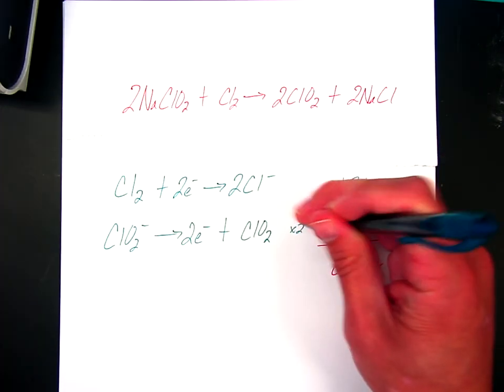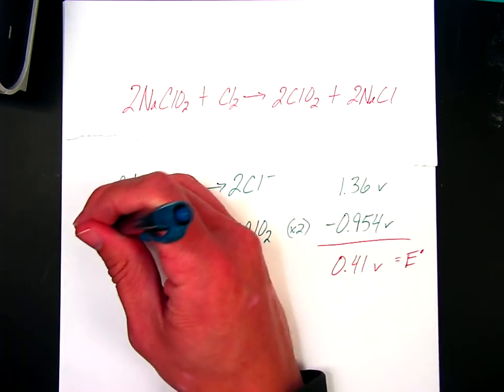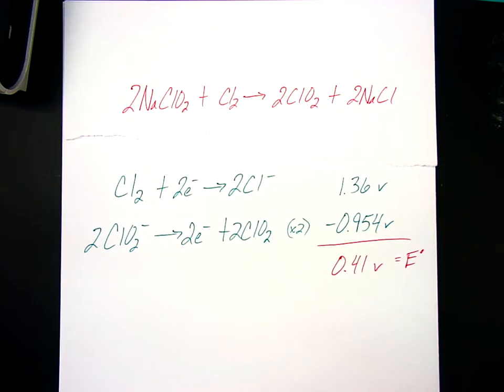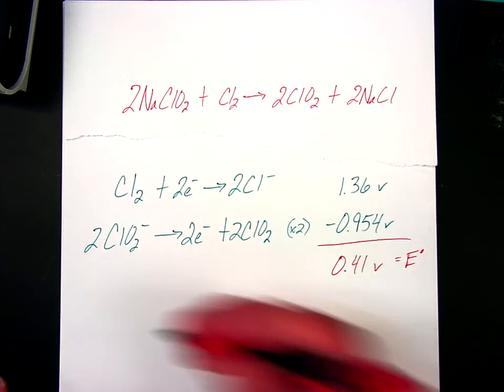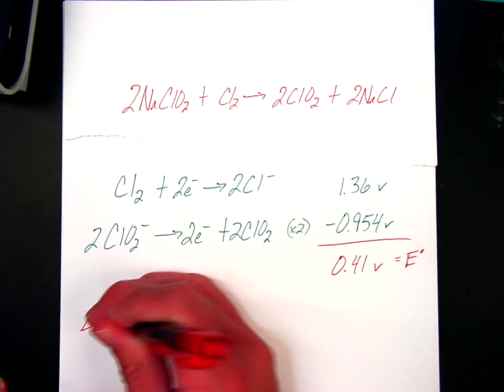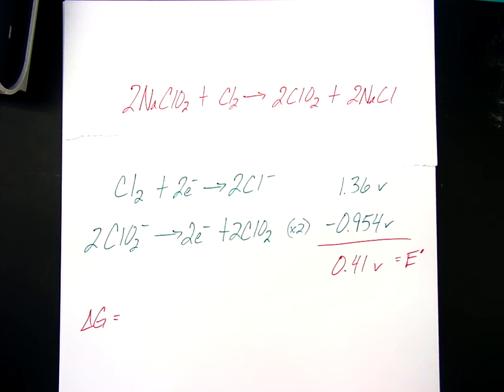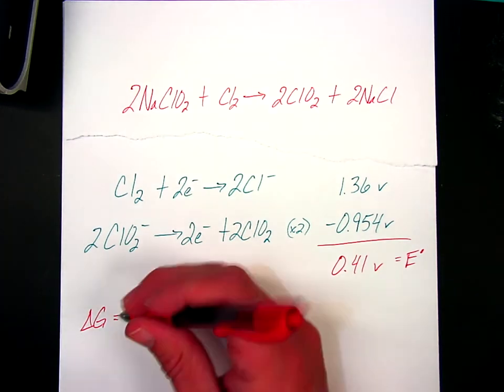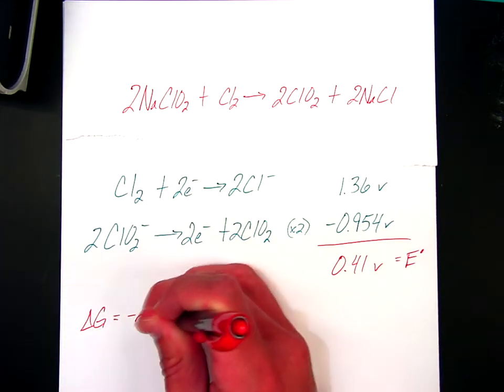But then in order to find delta G, that's where I will need a balancing act to take place here, because remember the number of electrons must be the same. So I'm going to multiply by two all of these guys here. When I do that, we'll get a different overall reaction that is actually not required in this problem, but I can use my free energy equation to find delta G.